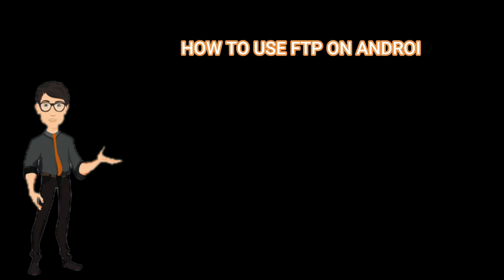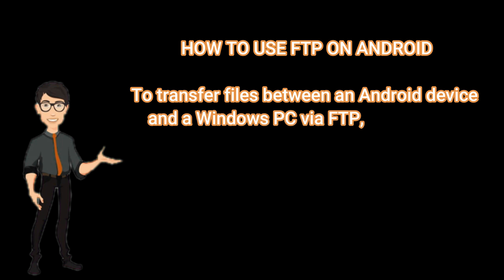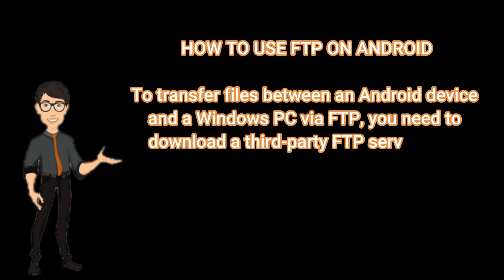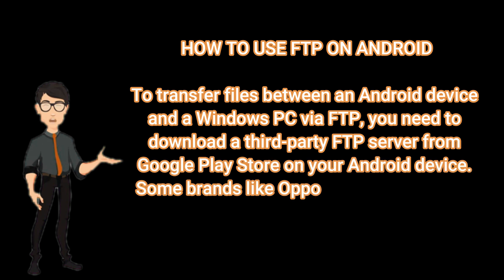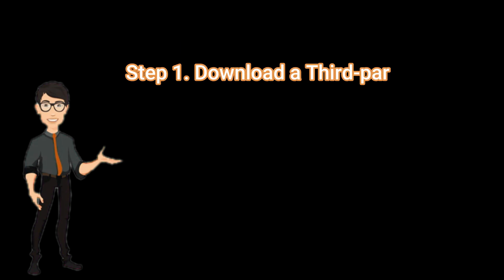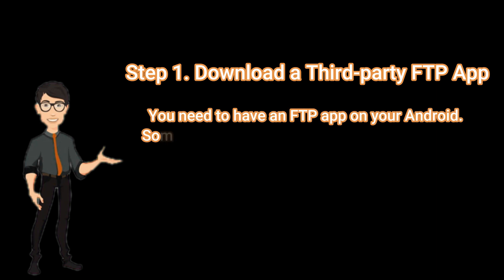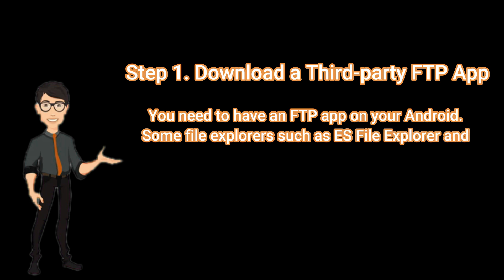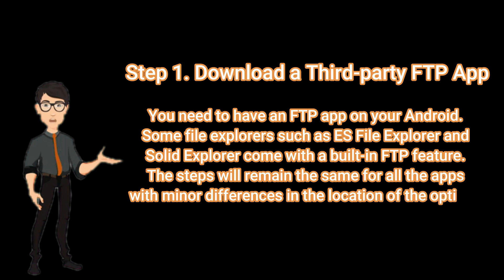To transfer files between an Android device and a Windows PC via FTP, you need to download a third-party FTP server from the Google Play Store on your Android device. Some brands like Oppo have a built-in FTP feature. Step 1: Download a third-party FTP app. You need to have an FTP app on your Android. Some file explorers such as ES File Explorer and Solid Explorer come with a built-in FTP feature.